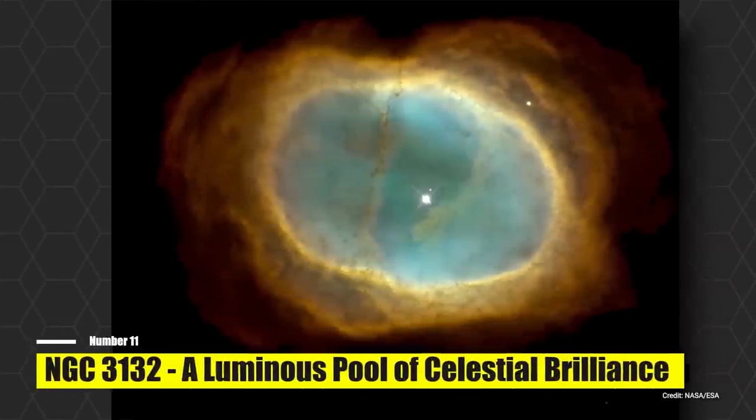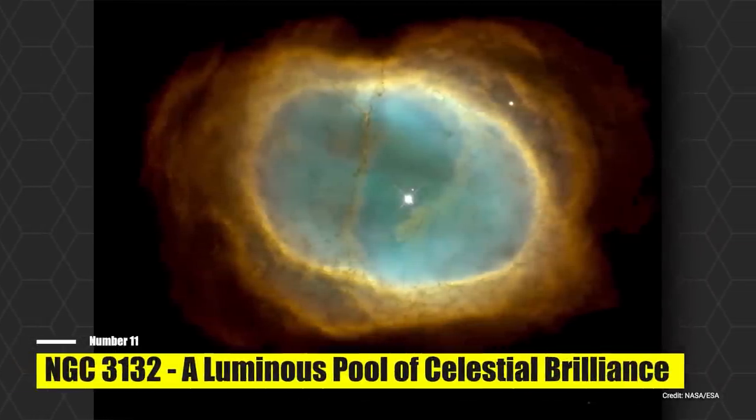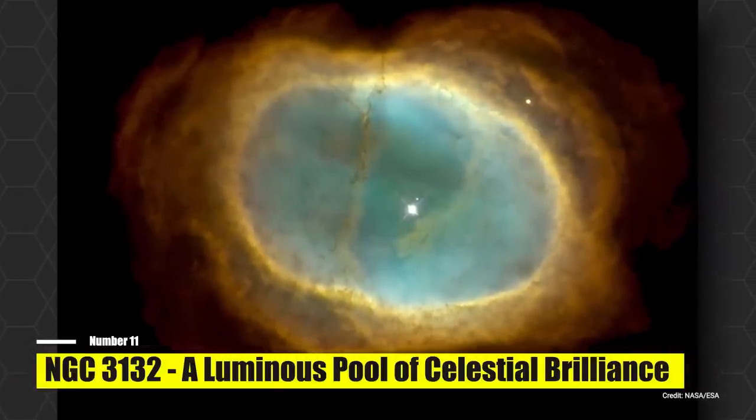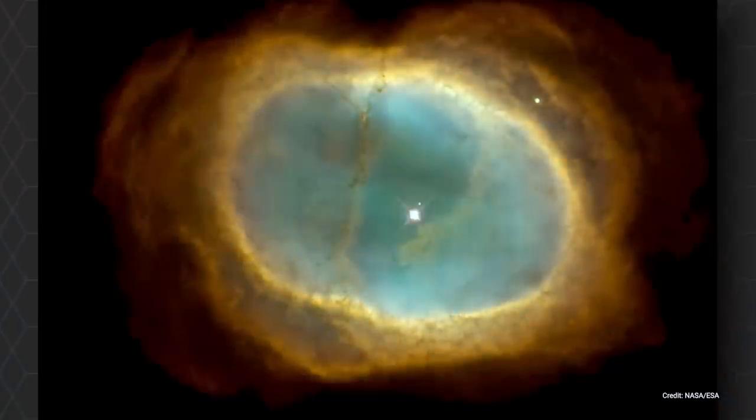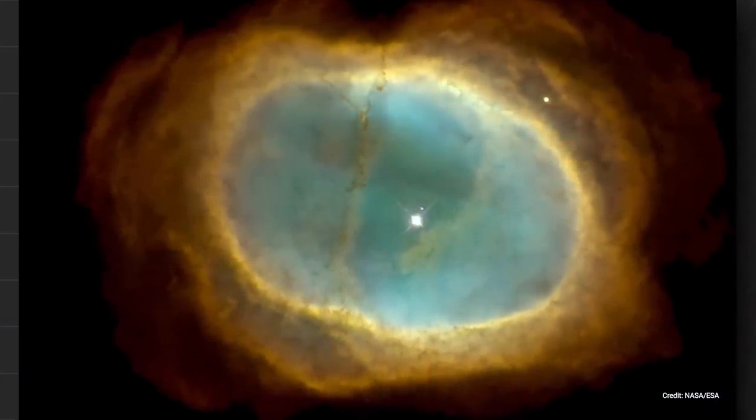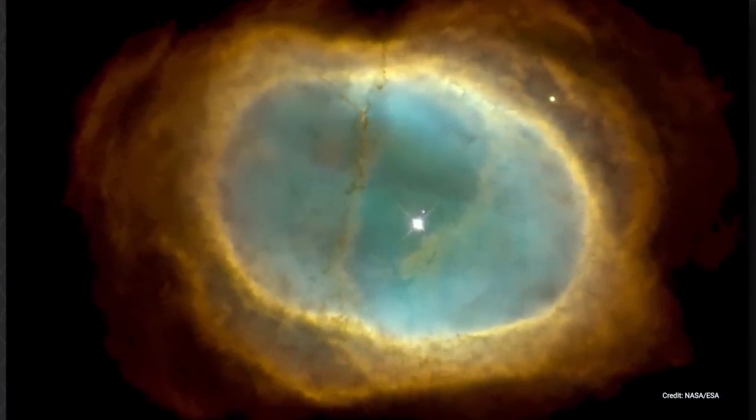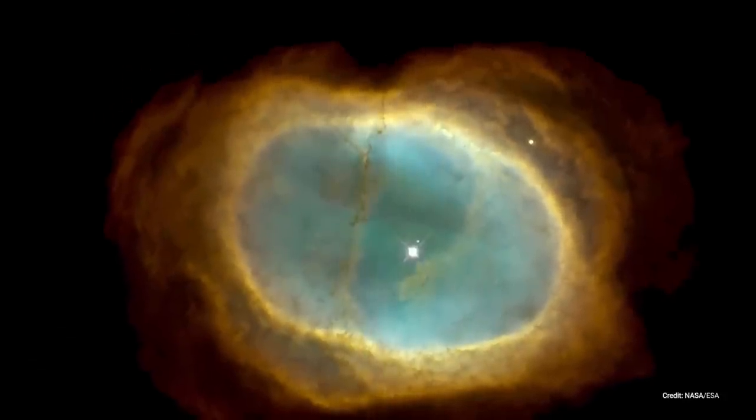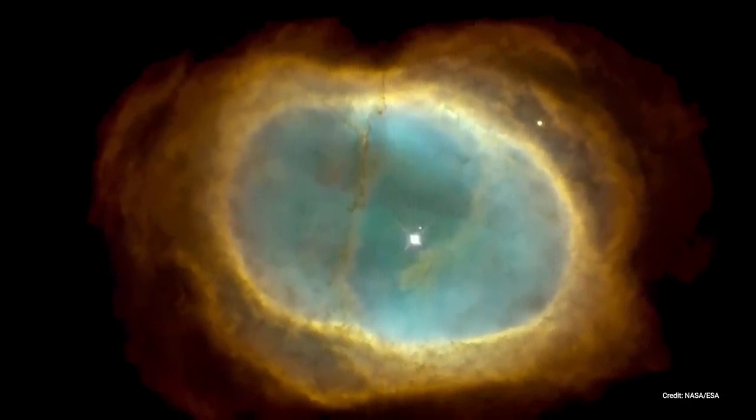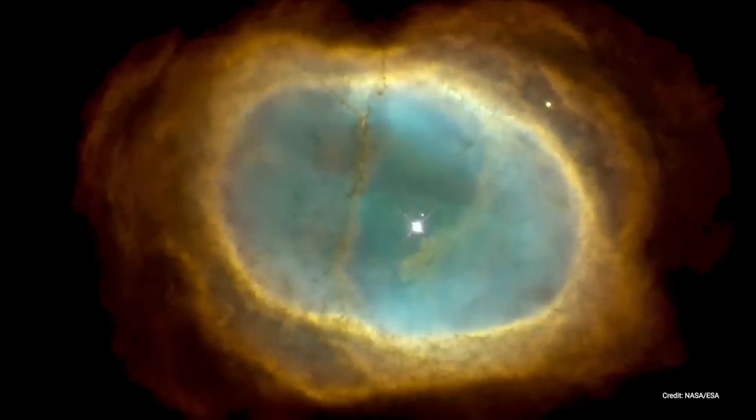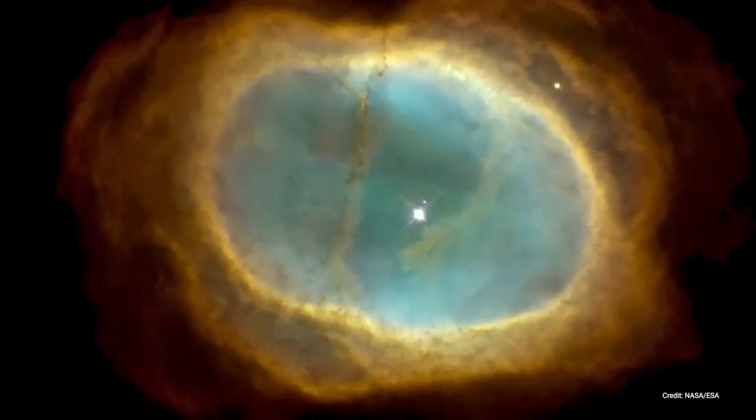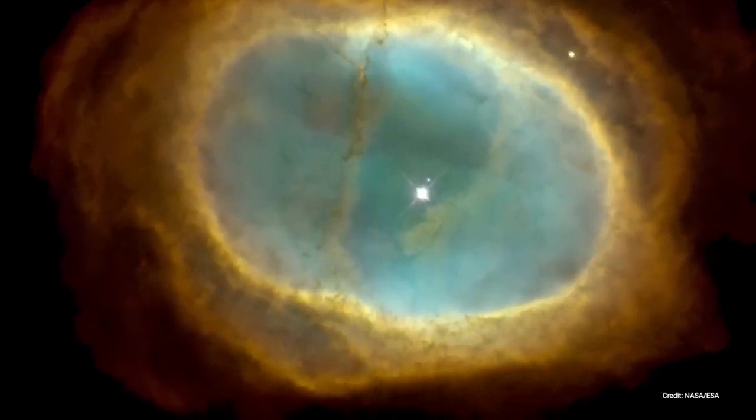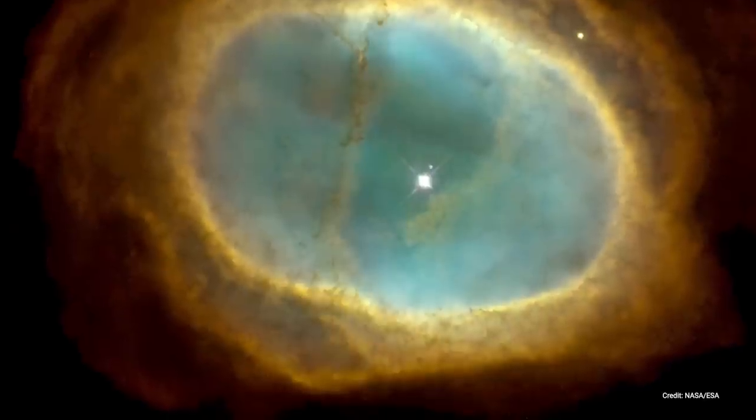Number 11, NGC 3132. A luminous pool of celestial brilliance. The NGC 3132 provides a spellbinding display of a planetary nebula. This radiant and ever-expanding cloud of gas engulfs a dying star, creating an exquisite celestial spectacle. For stargazers residing in the Southern Hemisphere, this glorious nebula is fondly referred to as the Eight Burst, or the Southern Ring Nebula. Much like an artist's masterpiece, the nebula is a vibrant splash of colors against the dark backdrop of the cosmos, a testament to the natural beauty that unfolds when a star concludes its life journey.